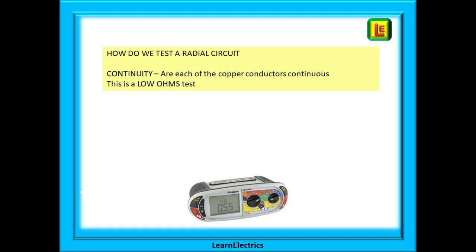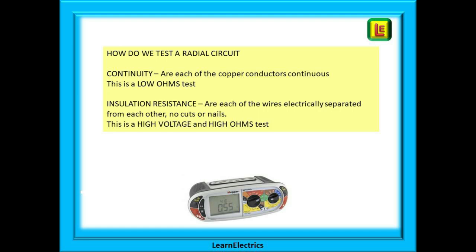If you can understand and master these tests you will be able to test any radial circuit confidently. Continuity tests must be carried out first — always first. We want to know if each of the copper conductors is continuous from one end to the other; until we have established this fact, all the other tests are meaningless. This is a low ohms test — in other words we are expecting test results of just fractions of an ohm, one or two ohms for longer cables, and for domestic work never more than five ohms. The voltage applied to the test is typically somewhere between four and nine volts.